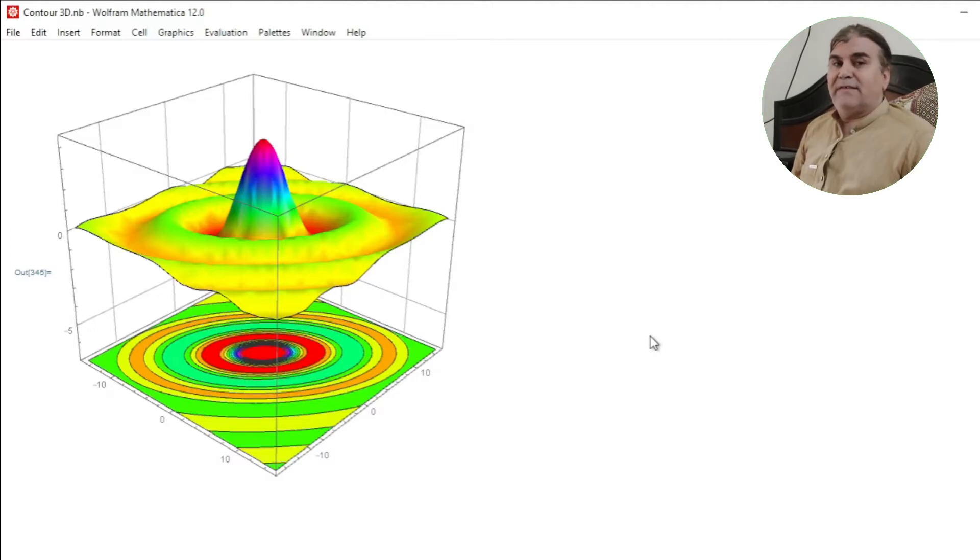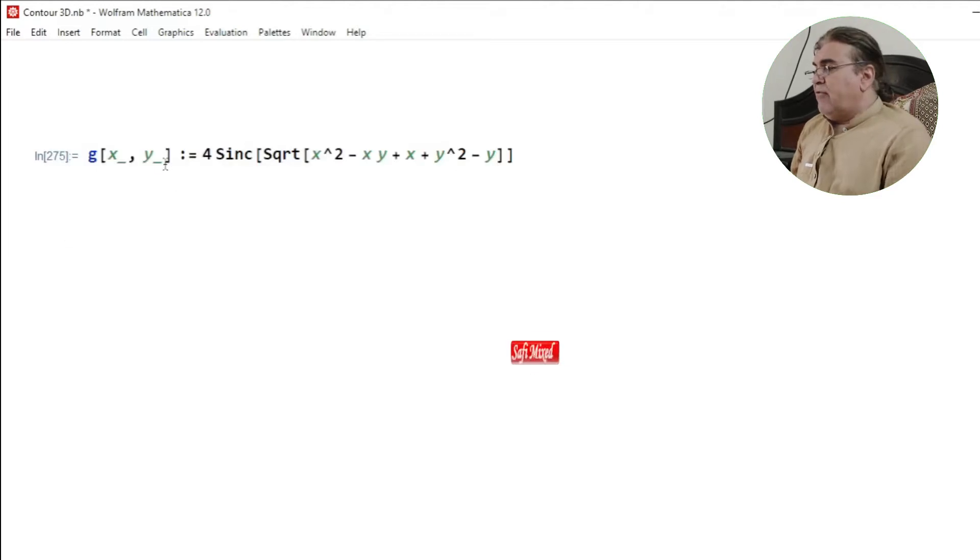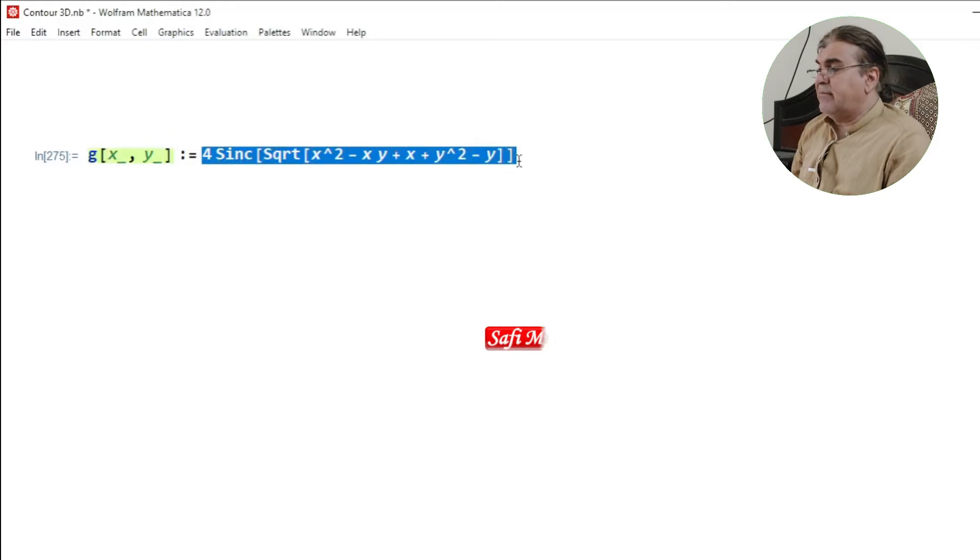Let's see how can we do this. So you see I have function g with dependent variable x and y and I put the form of the function at this side on the right side of the equation.